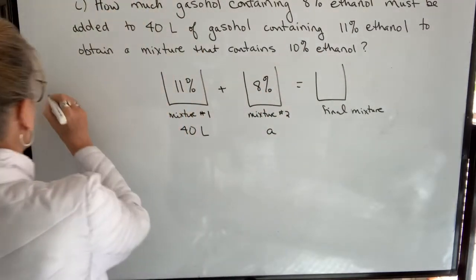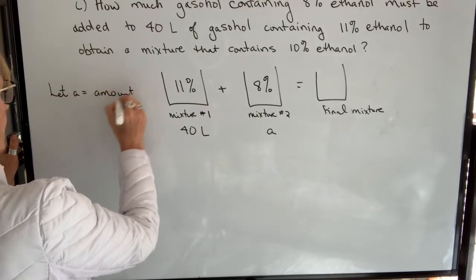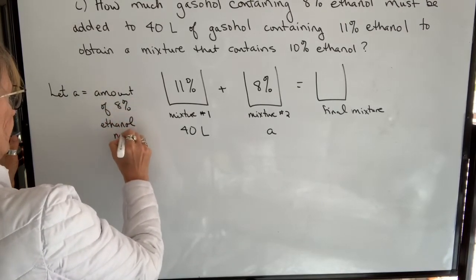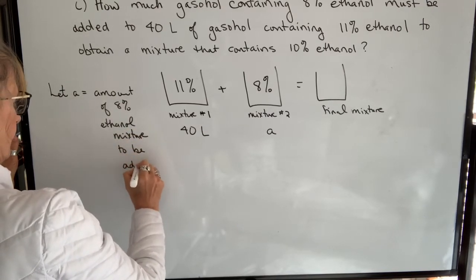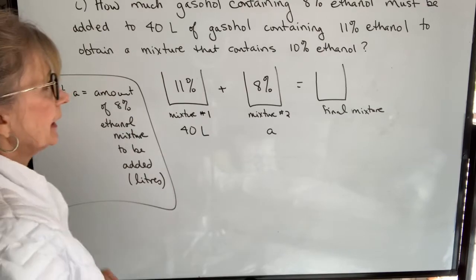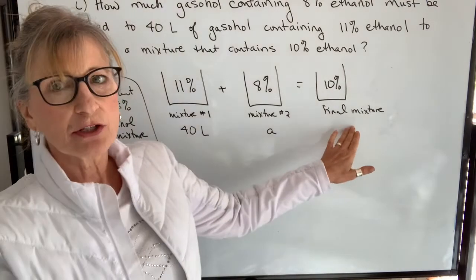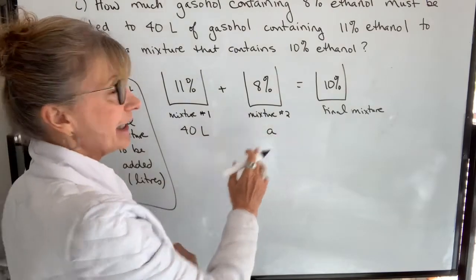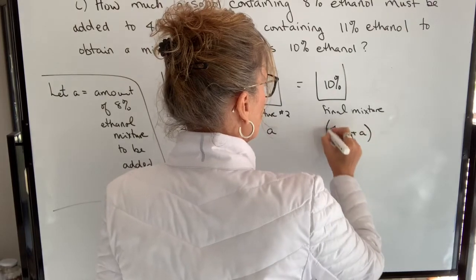I want to know how much of this 8% mixture has to be added, so that's going to be my unknown. Let A equal the amount of 8% ethanol mixture to be added, in liters. I want to end up with a final mixture that's 10%, and I don't know how much I'll end up with; however, I'm starting with 40 liters and adding A liters, so I must end up with 40 plus A liters.